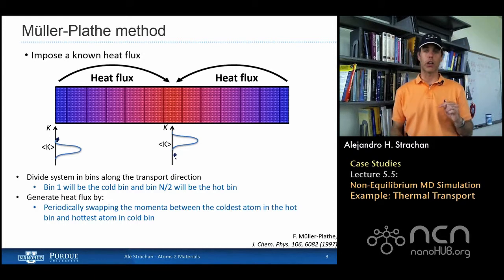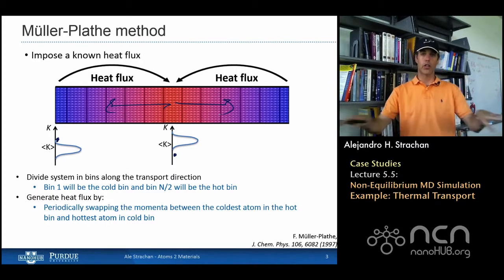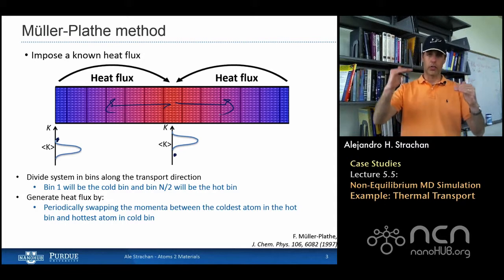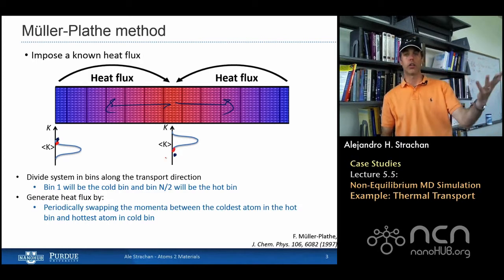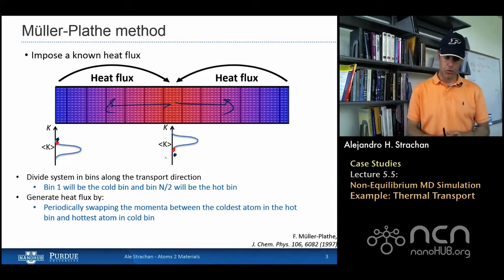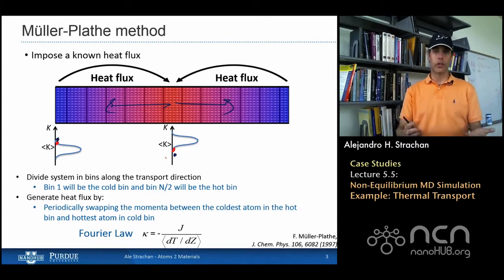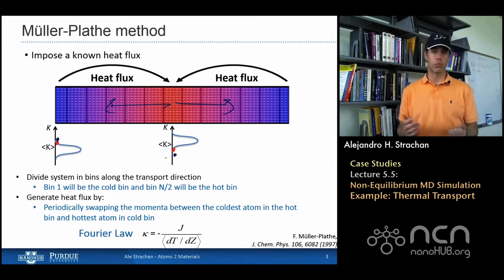I artificially impose a heat flux from cold to hot, and of course the material is going to carry that heat internally back from the hot to the cold bin — and that's what I'm going to measure. As I do that, the two Gaussians move up and down, and the method works as long as the hottest atom in the cold bin and the coldest atom in the hot bin allow us to transfer energy from hot to cold. With time I keep doing this periodically, swapping atomic velocities every say 100 molecular dynamics steps, and in time a steady state develops. I measure a temperature gradient, and using Fourier's law I can obtain the thermal conductivity.